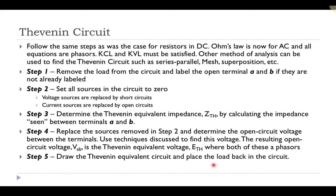A Thévenin equivalent circuit is nice because you can take a complicated circuit and reduce it down to one voltage supply and, for DC, one resistor. It works similarly for AC circuits: we can reduce a complicated circuit down to a single equivalent AC voltage source and one equivalent impedance connected across a set of terminals. This allows us to change the components across the terminals without having to reanalyze the complicated circuit. The steps for determining a Thévenin equivalent circuit for AC are very similar to DC.